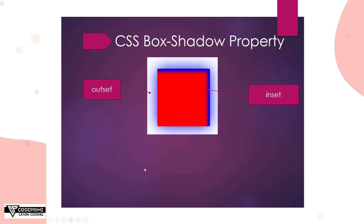We are going to learn how it actually works, from basic shadow to advanced shadow, which you can use when making designs like glassmorphism or advanced CSS designs. Both the outset and the inset properties are very important for creative and advanced designing. Let's start the video right now.